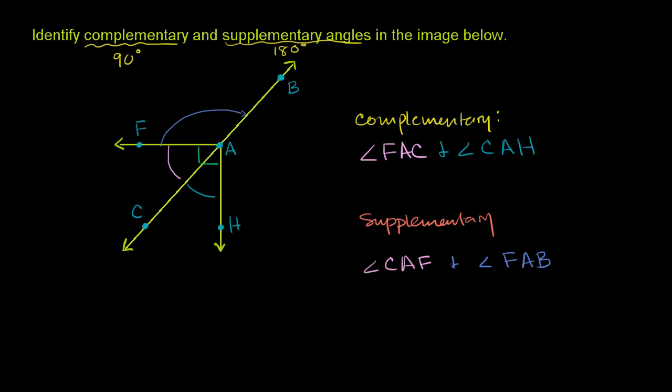And then the other one, we could do angle CAH, which is this right over here. That plus HAB clearly add up. They form, they're adjacent, they form a straight angle. So they are clearly adding up to 180 degrees. So they are also supplementary. CAH and angle HAB.